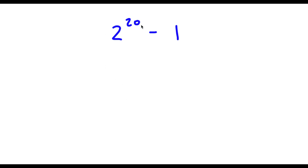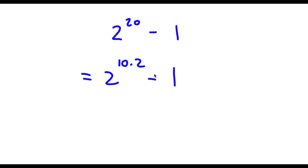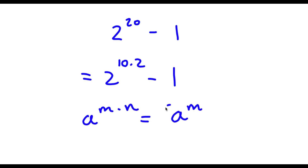Alright, so I have 2 to the power of 20 minus 1. Now 20 here we can rewrite this as 10 times 2. So now I have 2 to the power of 10 times 2 minus 1. Now if I have something in the form a to the power of m times n, this is the same thing as a to the power of m to the power of n.